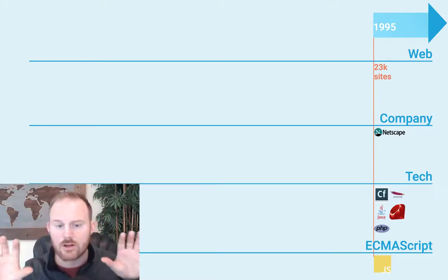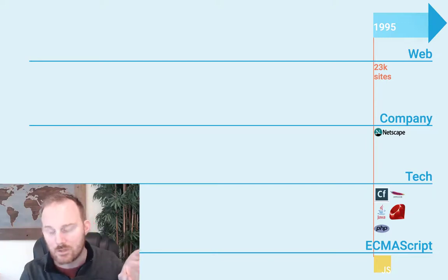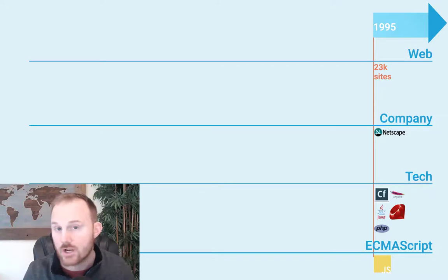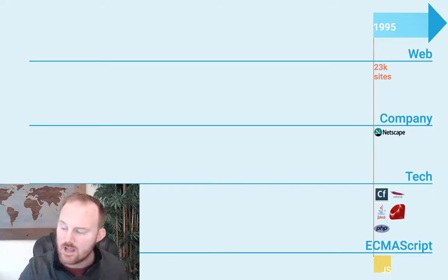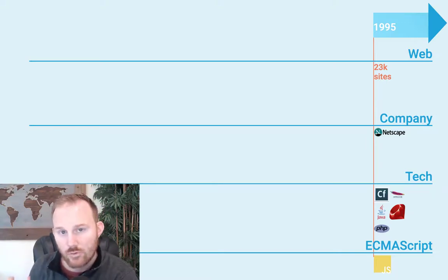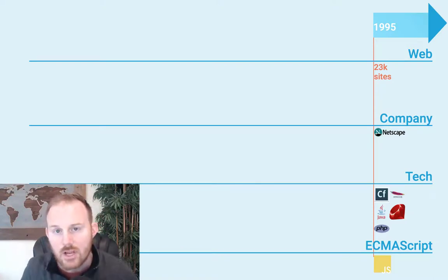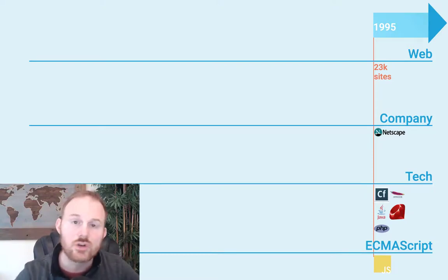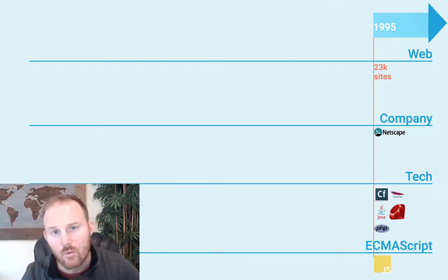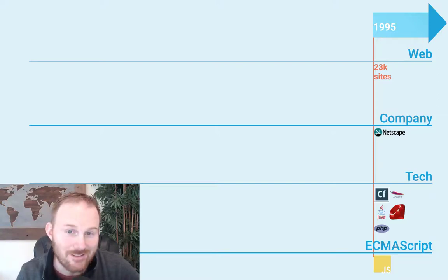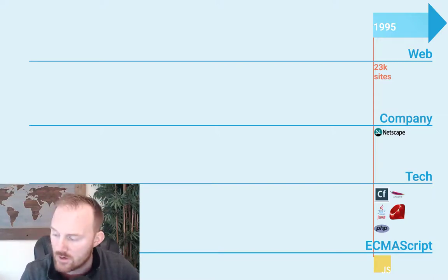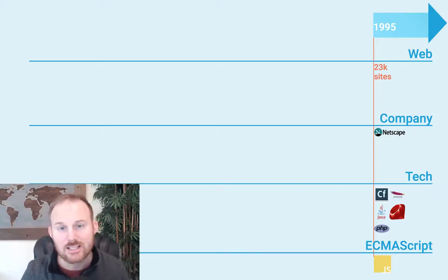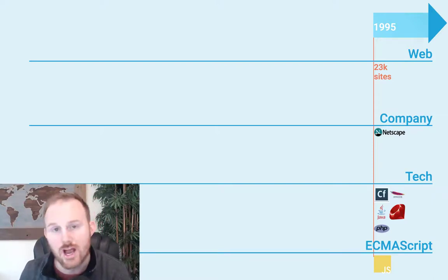There's a very clear connection between Java and the scripting language called Mocha. The thought is Java will do the back-end server-side stuff, and this new scripting language by Netscape will do the front-end client-side stuff. So it was very easy to switch the name when they made the deal with Sun — they said you can call it JavaScript. It's a huge win for Netscape because they get to ride the Java popularity train. Java has been pretty much the most popular language ever since, at least according to the Tiobe index.